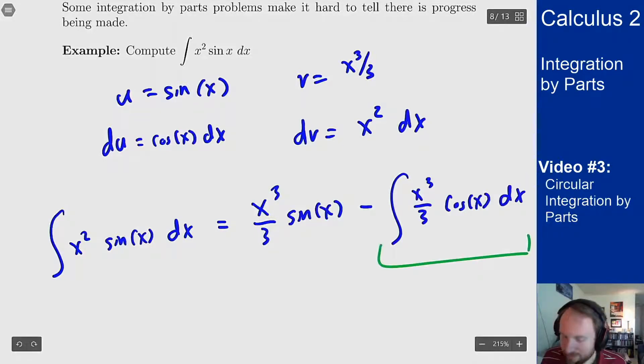And we notice here this integral did not get any easier. It's actually strictly harder than the one we had before because we went from an x squared to an x cubed. It's going the wrong way and that's never going to go away if I keep doing this process. I'm going to keep adding powers over and over again. So because this integral is more complicated I know I've gone the wrong direction.